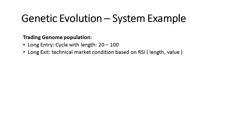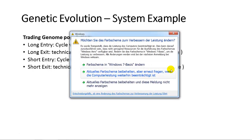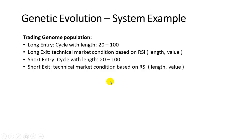For the short entry, we use an additional cycle with a length between 20 and 100 bars, same as the long entry signal. We also add a short exit strategy based on a technical market condition using the RSI with a different length setting and a value for a crossover. So our trading system is based on a population with one cycle to go long and another cycle to go short, and the cycle length is not known — it will be detected by the genetic algorithm.